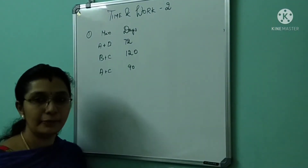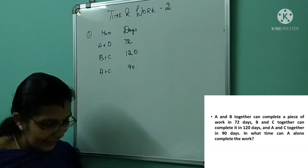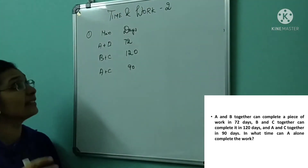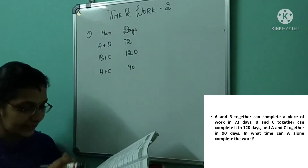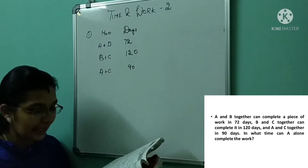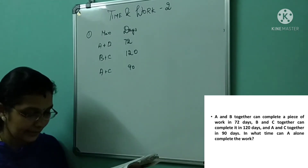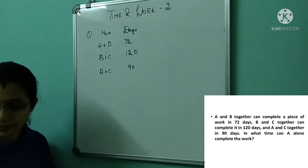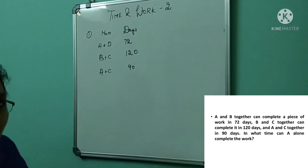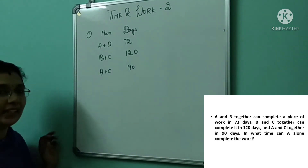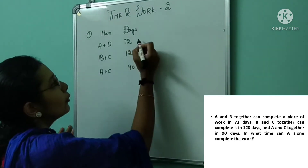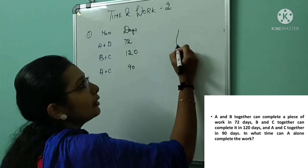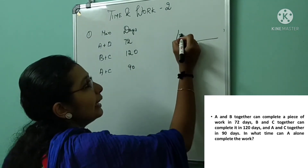Here is the last and final question. A and B can do a piece of work in 72 days, B and C can do it in 120 days, while A and C can do it in 90 days. In what time can A alone do it? They are asking for A alone, but we will find the combined efficiency first and then find A. Find the LCM for 72, 120, and 90.